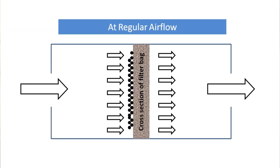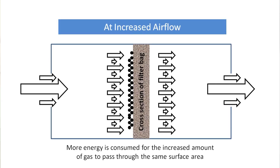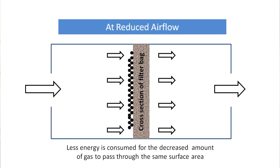For understanding purposes, we must consider that only the flow rate is going to change. We are not going to change the dust load in your filter bags. At a constant dust load, the area available for the air or gases to pass through the surface of the filter bags remains constant. When we increase the flow rate, more gas passes through the same surface area in the same amount of time, hence more energy is required, so DP increases. When we reduce the flow rate, less quantity of gas passes through the same surface area, hence less energy is required, so we get a lower DP.